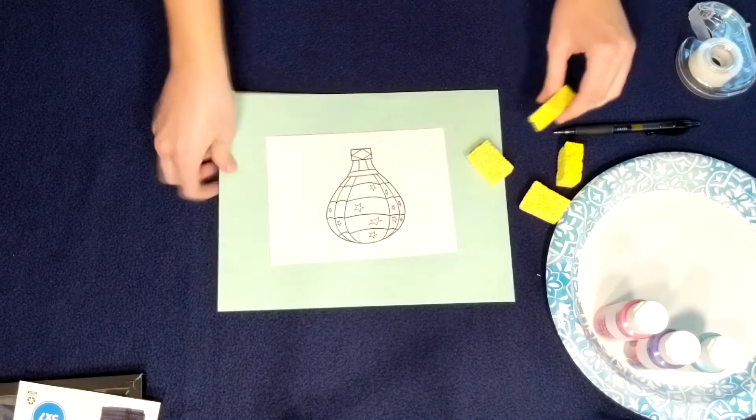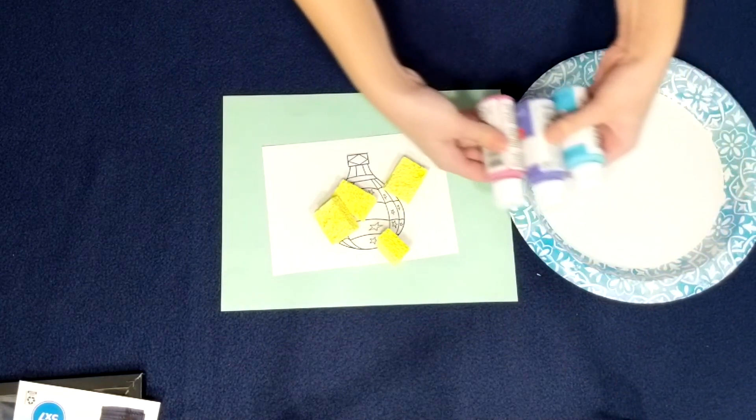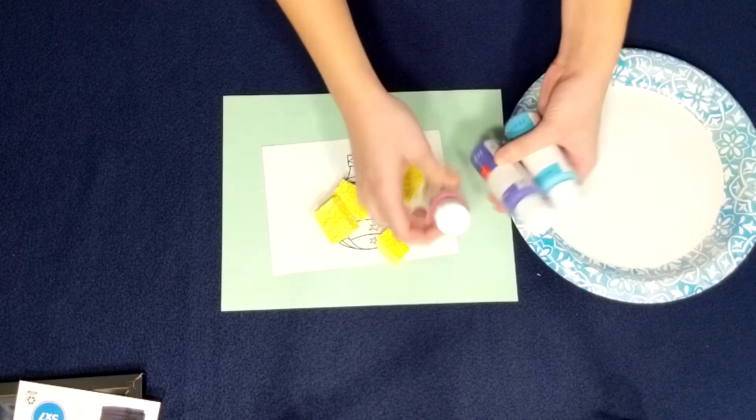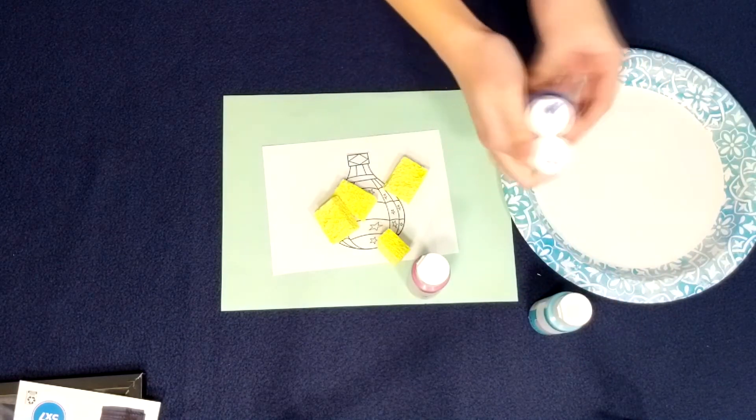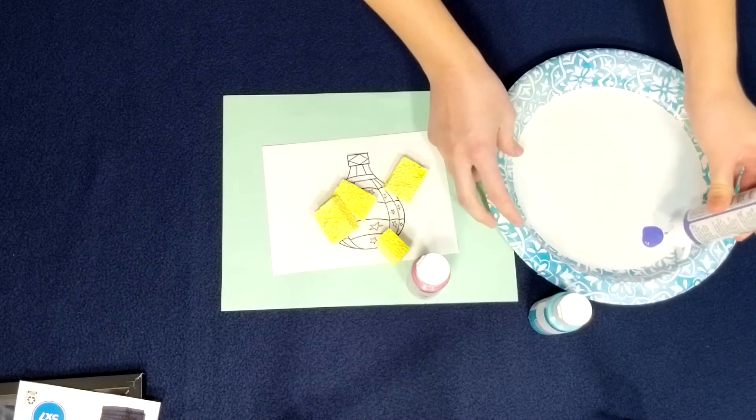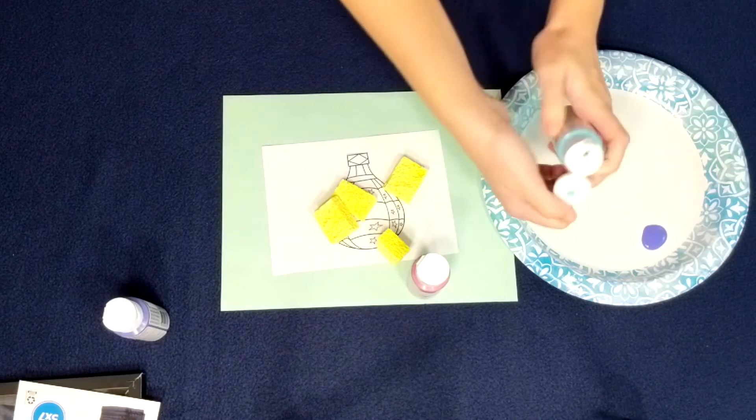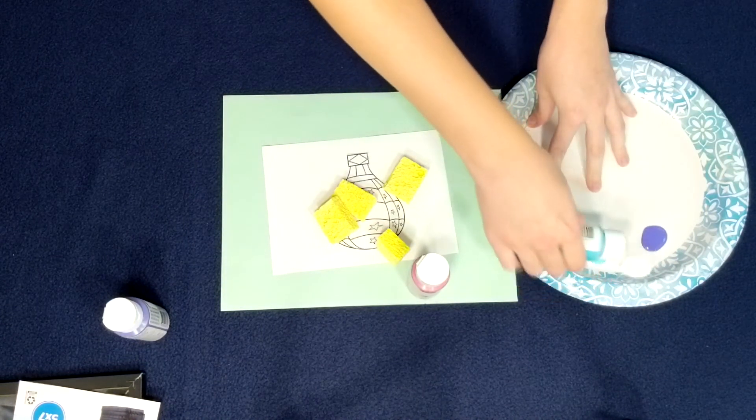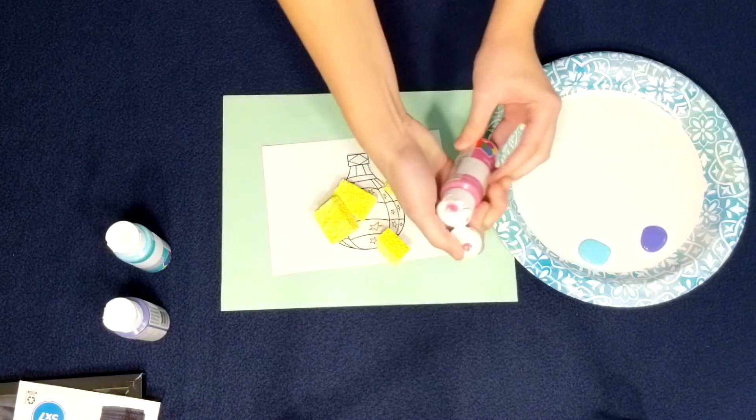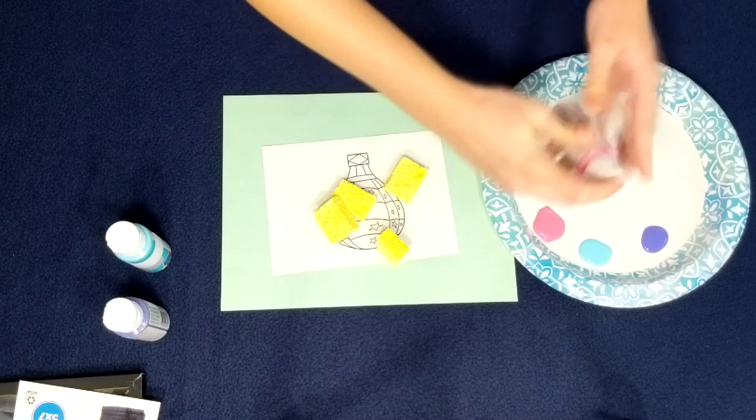Then you will take your paper plate and you can use any color paints. I recommend using three and using a dark and a medium and then a light color. So I'm using purple. You can go ahead and pour your dark paint onto the plate. You don't need much. And then I'm going to pour the medium, which is turquoise. And then I'm going to pour the light, which is the pink.